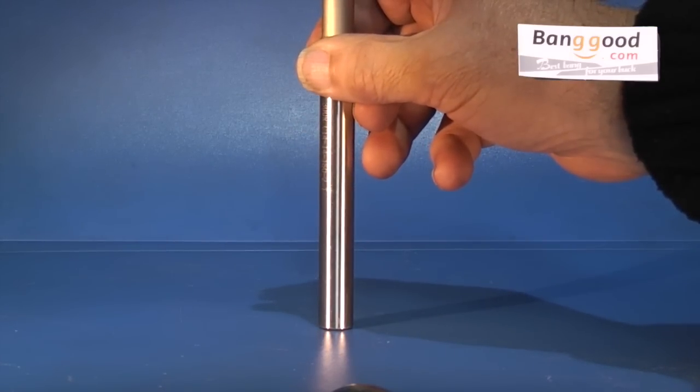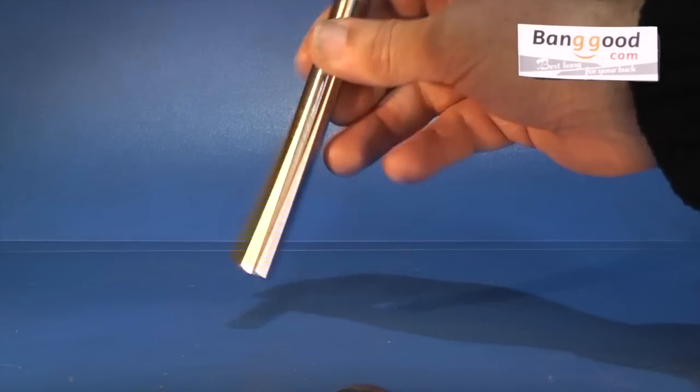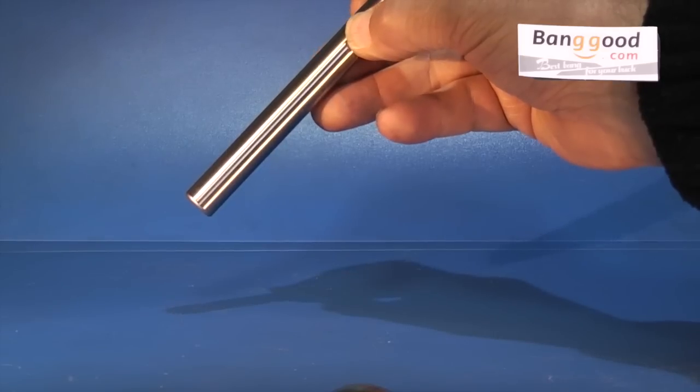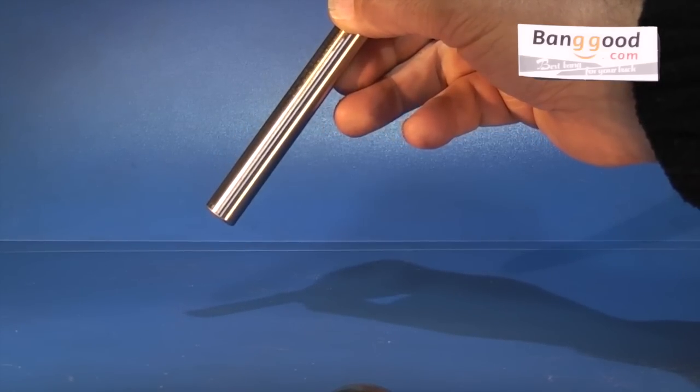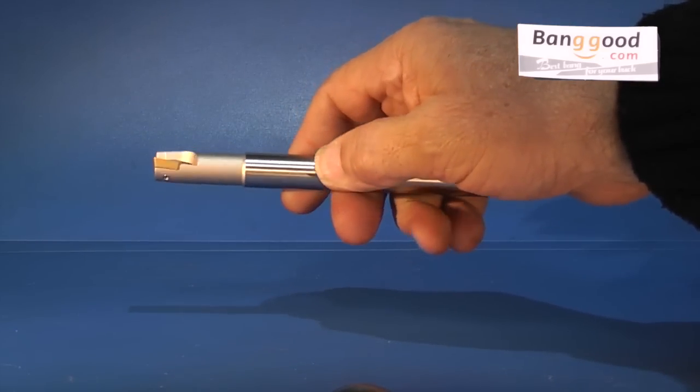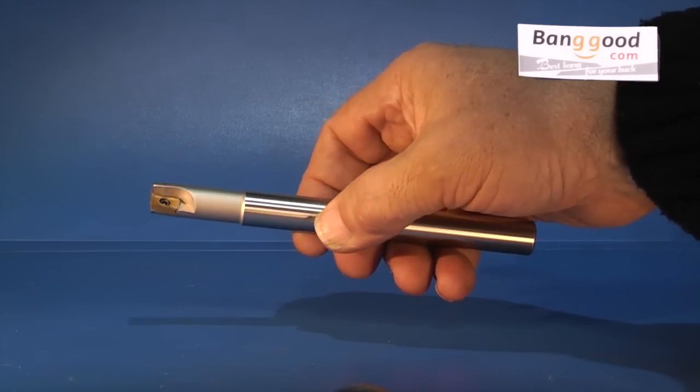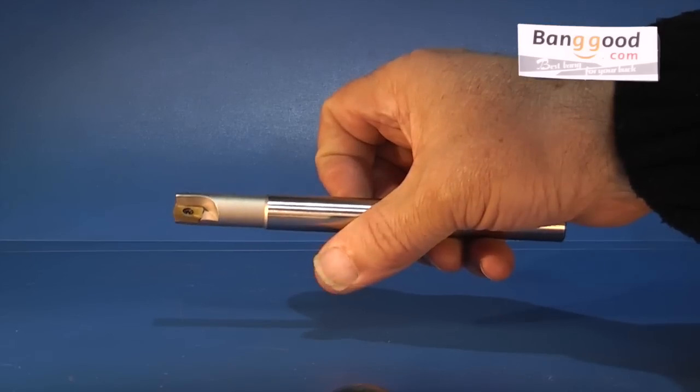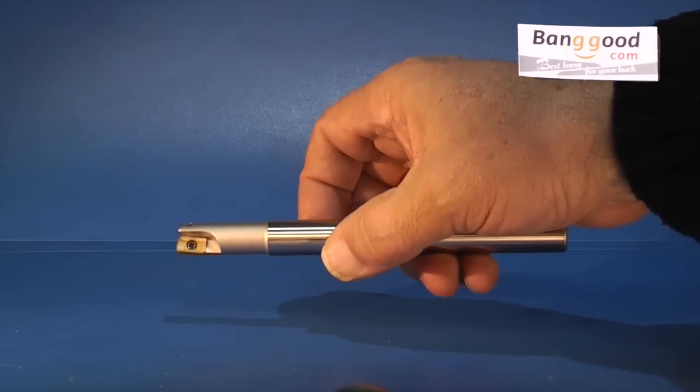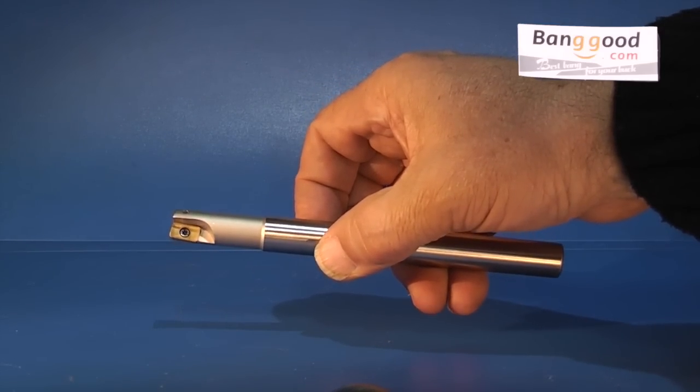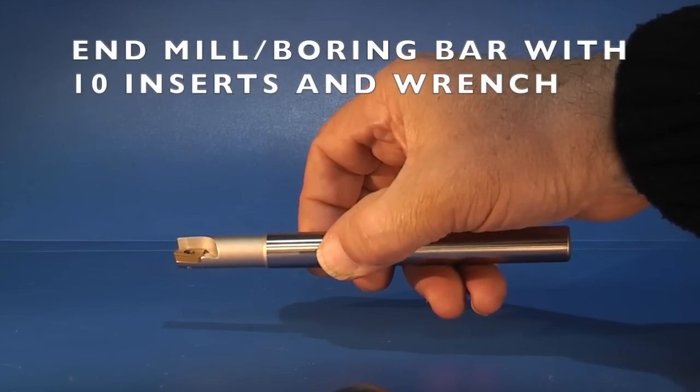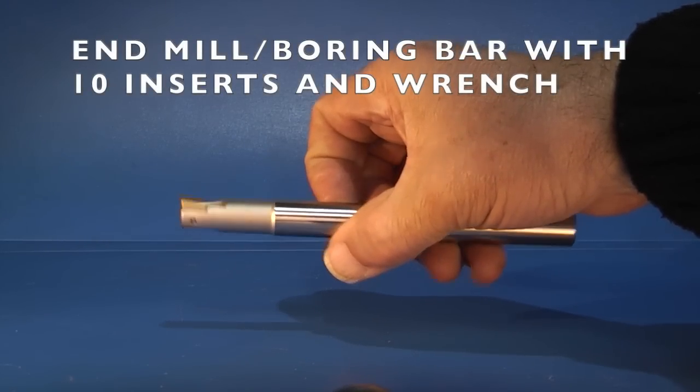This part's listed as a boring bar or milling cutter. It comes with a set of 10 inserts and the key for tightening them up. I think this is a bit too long to use as an end mill, it's over 150mm long. But I think it'll make an ideal boring bar for the lathe. So I'll try that on the lathe a little later.